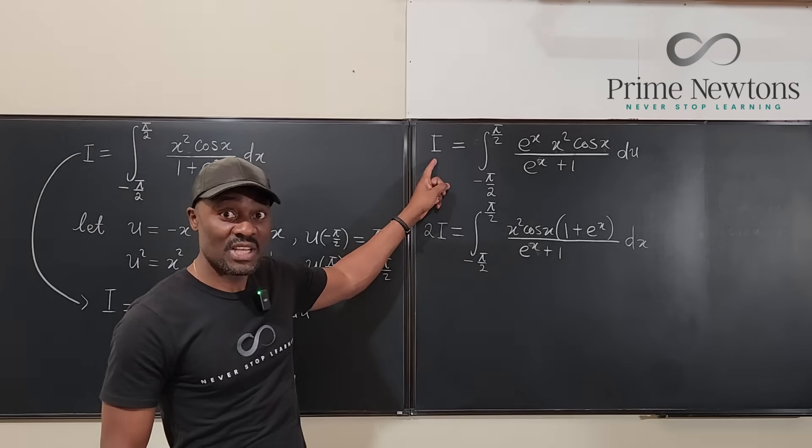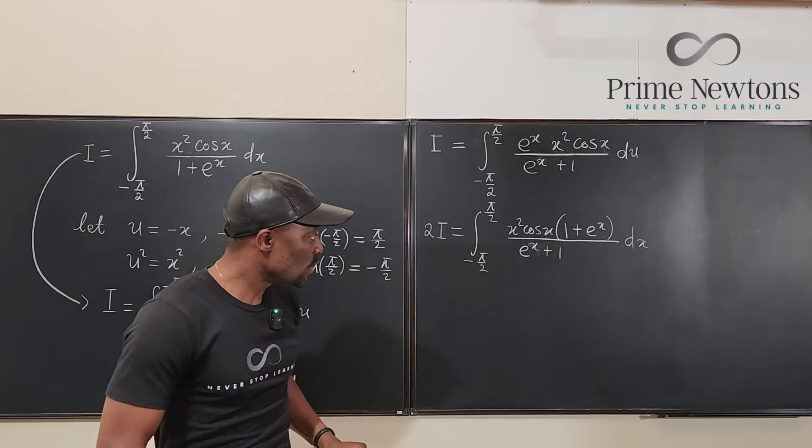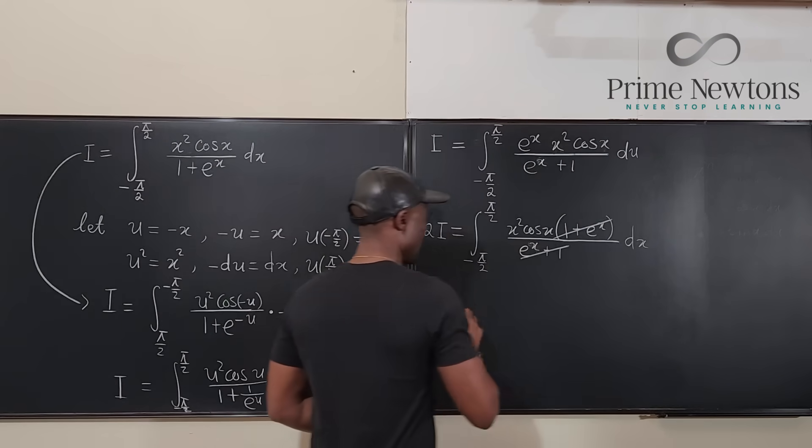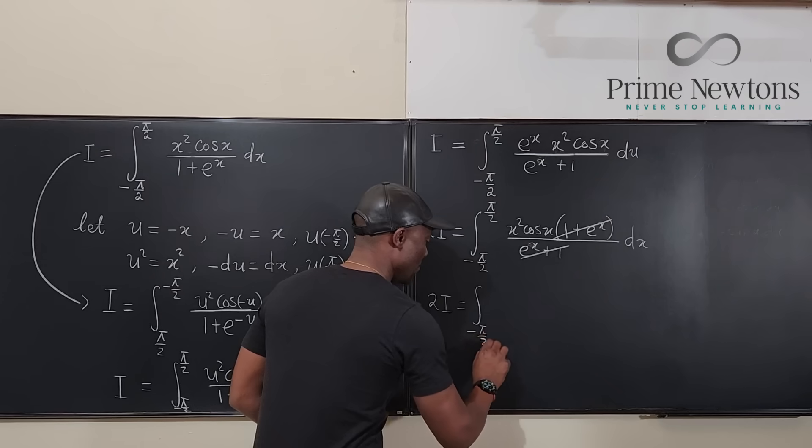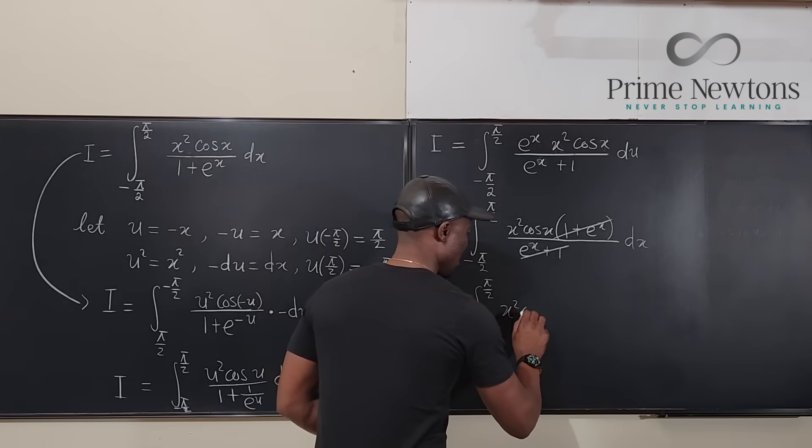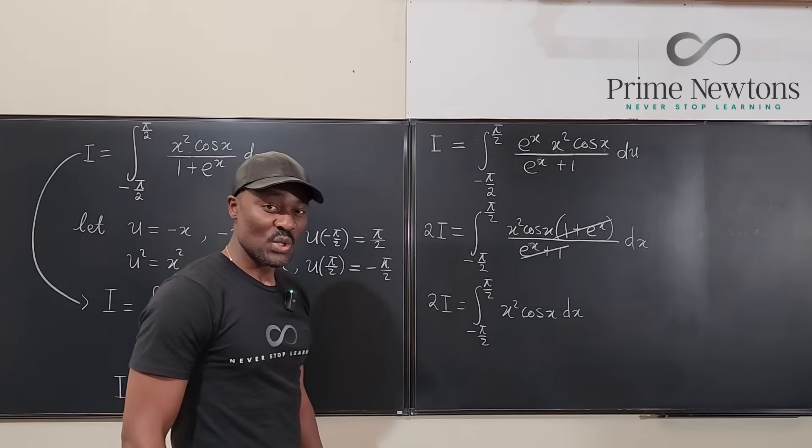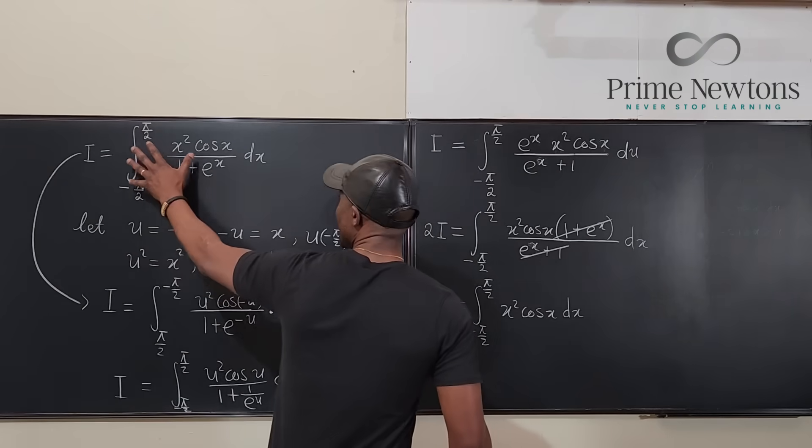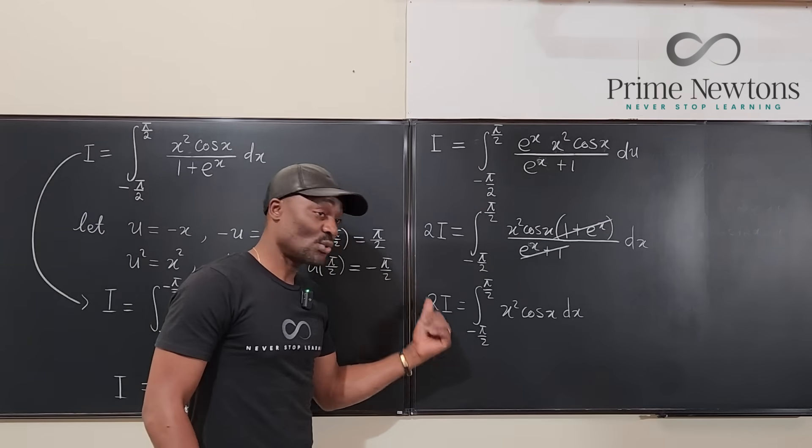Now don't forget it's because it is I. So adding these two together is still the same thing. So now what do we have? We can cancel this out. And we have 2I is equal to the integral from negative π/2 to π/2. And we have just x squared cosine x dx. So that means the original integral that we had here is exactly this integral. It is just that this one is twice that.